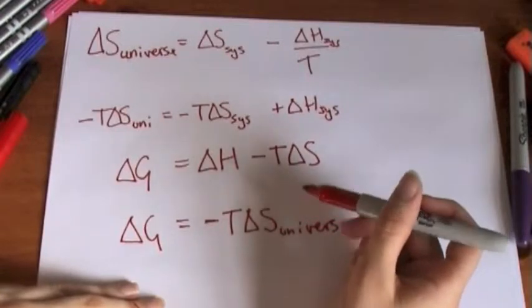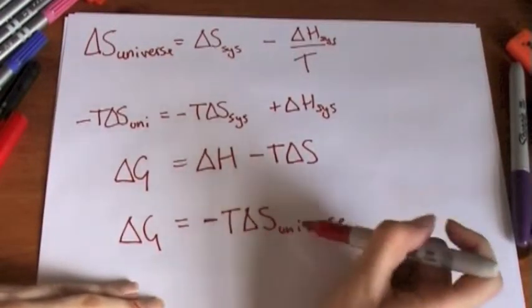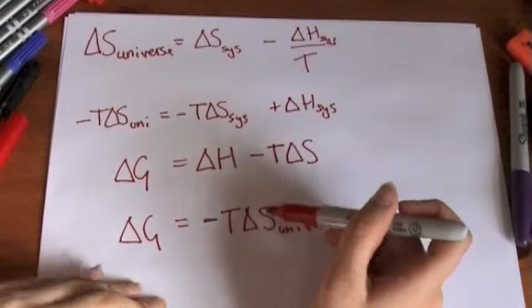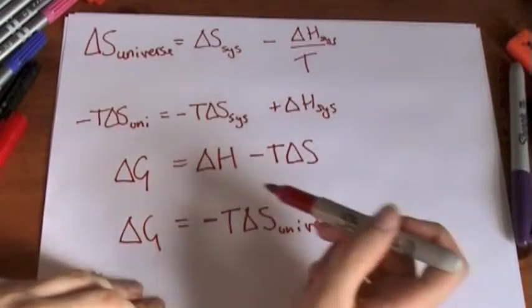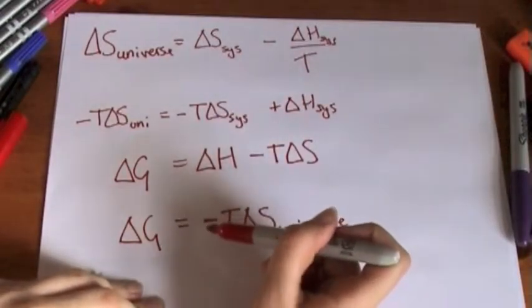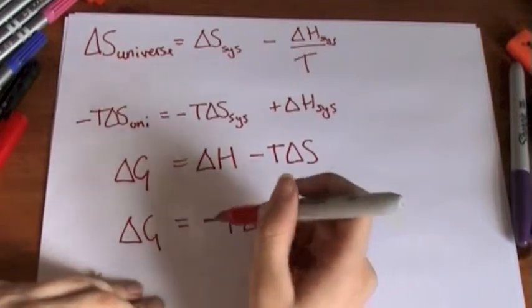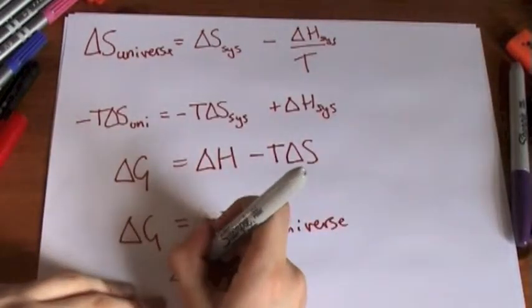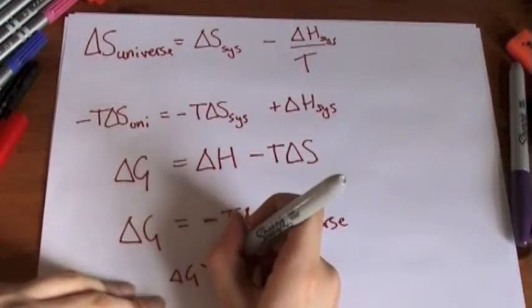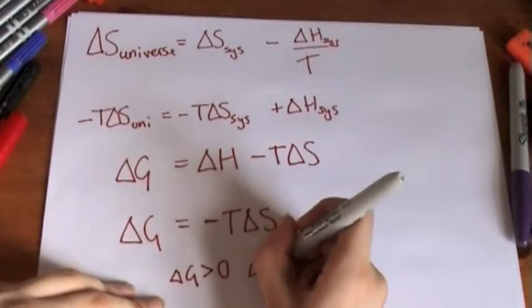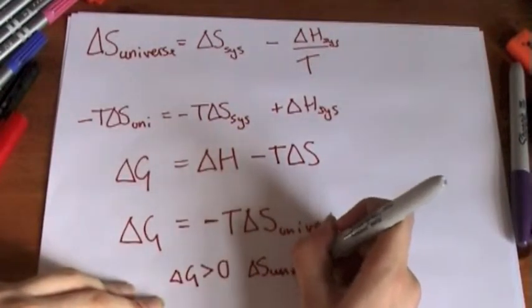So if this is positive, then delta G, because it's got a negative sign in front, must be negative. So that means that if delta G is greater than zero, the delta S of the universe is smaller than zero. And that's not what we want.